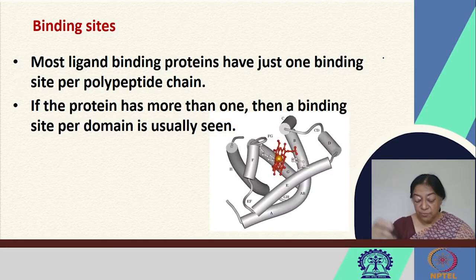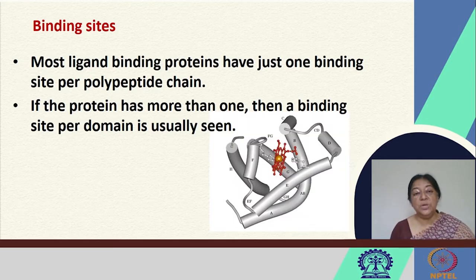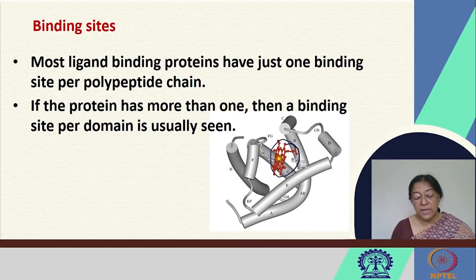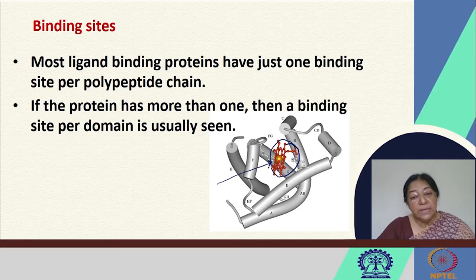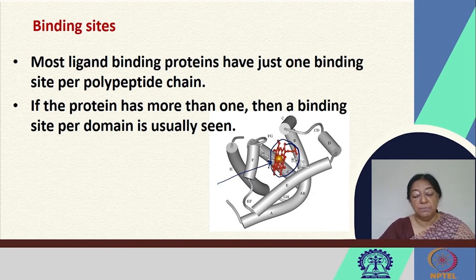For example, if we look at the structure of myoglobin, which is a monomeric chain, we have the porphyrin ring — the heme group — that has the iron molecule which binds oxygen. If we look at hemoglobin, a tetrameric molecule similar to myoglobin, it has four of these heme ligands bound to the hemoglobin.